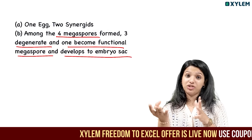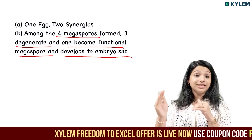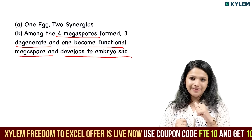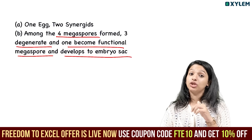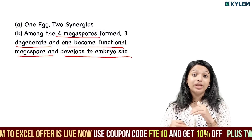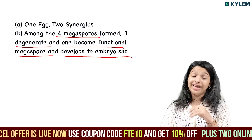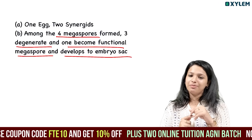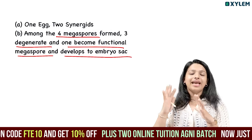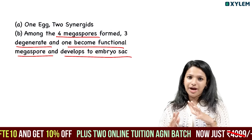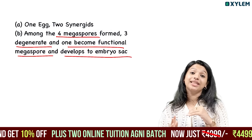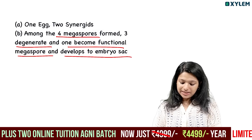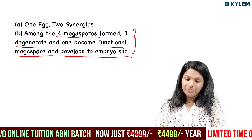Megaspore development proceeds through meiotic division to form 4 megaspores. Three of them degenerate, leaving the functional megaspore. That functional megaspore develops into the embryo sac — that is the monosporic type of embryo sac development.